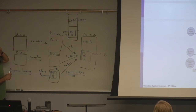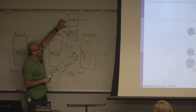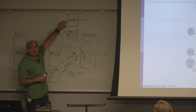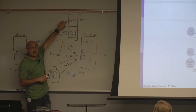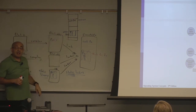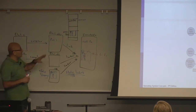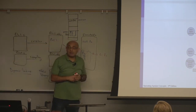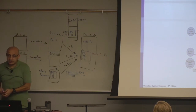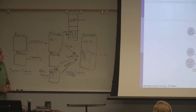With dynamic linking, the executable for the program does not have the body of function fx in it — it only has information about the dynamic link library that has the actual body of function fx. What are the advantages of dynamic linking compared to static linking?